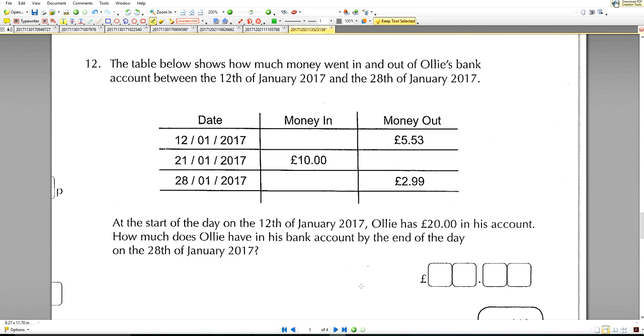Question number 12. The table below shows how much money went in and out of Oli's bank account between the 12th of January and the 28th of January 2017. At the start of the day on 12th of January, Oli has 20 pounds in her account. So the account starts with 20 pounds. 20 pounds is the balance that's already in the account. And then we have this much money coming out. Then we have this much money coming in. How much does Oli have in the bank account by the end of the day? So we start with 20, and then we've got to minus the five pound fifty, then we've got to add a ten pound, and then we've got to minus two pound ninety-nine. So you come to a nice lovely answer of 21 pound 48.